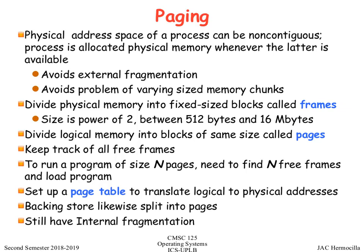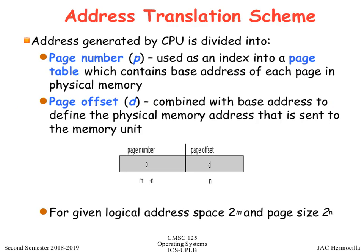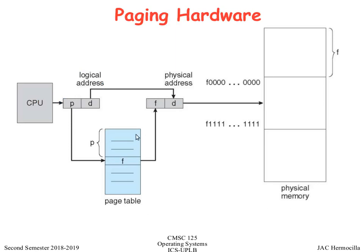You have a process that requires a certain number of pages, and this number of pages will be mapped to the physical memory frames. A logical address, or virtual address, is given by a page number and a page offset. We have this data structure called the page table. The page number is a lookup or an index in the page table, which specifies the base address of the physical address. Then it's added to the offset, and you get the actual location in physical memory.